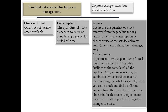Adjustments are the quantities of stock issued to or received from other facilities at the same level of the pipeline. Also, adjustments may be administrative corrections made to stock keeping records — for example, when you count stock and find a different amount from the quantity listed on the BIN cards. For this reason, adjustments may involve either positive or negative changes to stock.